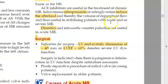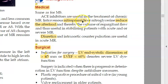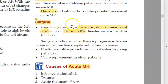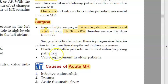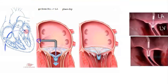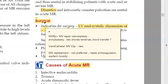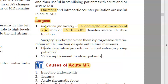Management of mitral regurgitation: medically, nitroprusside is given to reduce afterload and diuretics are used. Surgically, valvuloplasty — repairing the valve — is preferred over replacement. There is also a new technology called the transcatheter MV clip, preferred in older patients, where a clip is delivered from the right atrium through to the left atrium and applied to the mitral valve.